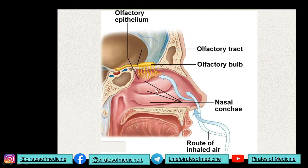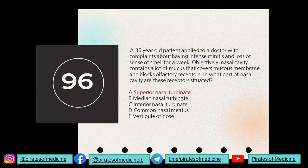The nasal cavity has three conchae: the superior, the middle, and the inferior. The olfactory epithelium — where the receptors are located — is on the superior nasal concha. That is why the answer is the superior nasal concha, or superior turbinate, which houses the olfactory receptors.